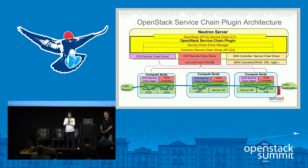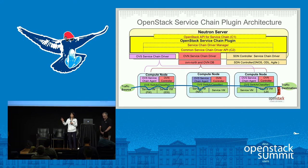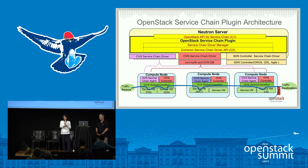This shows the OpenStack service chain architecture. At the top is a neutron server; at the bottom are compute nodes. On the neutron server, we have the OpenStack service chain API. At the southbound, different service chain drivers can plug in to realize the service chain functionality. We have already implemented the native path, which is the OVS service chain driver — the purple block — which talks with the OVS service chain agent and programs the OVS switch to properly steer flows through the service functions.